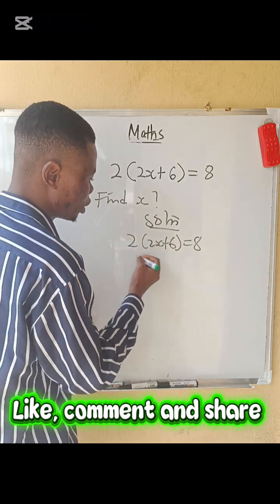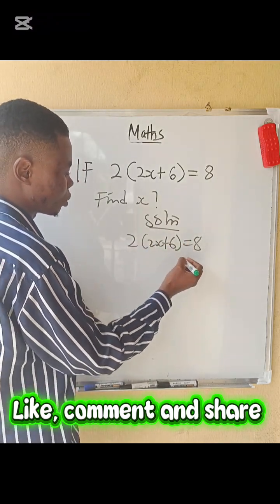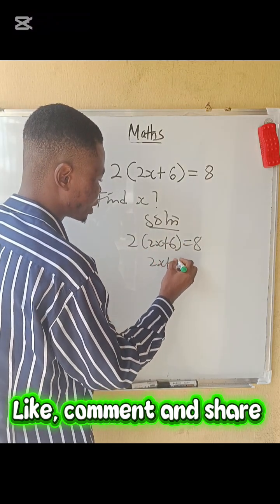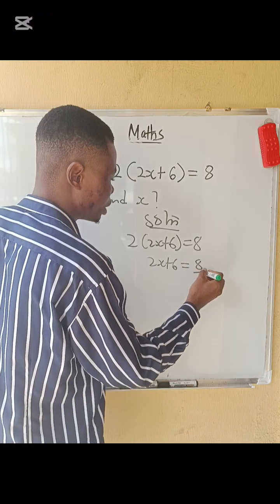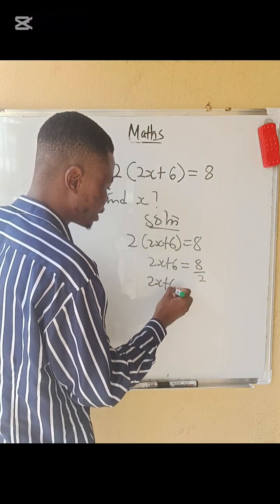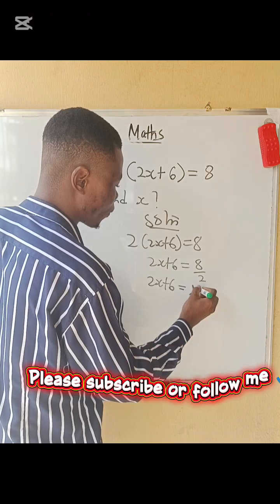So we can divide both sides by 2. Dividing by 2, these 2 go out and I have 2x plus 6 equals to 8 divided by 2. So 2x plus 6 equals to 4.